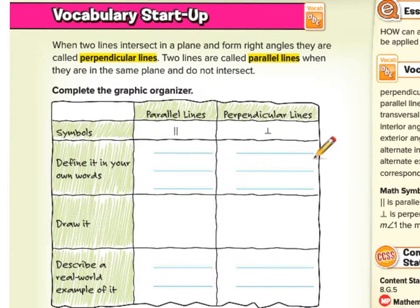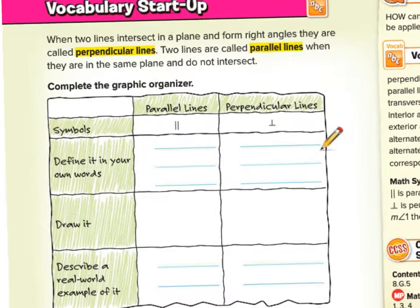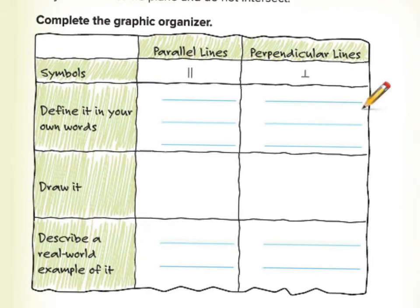Since we have so much vocabulary to look at, it only makes sense to start there. When two lines intersect in a plane and form right angles, they are called perpendicular lines. Two lines are called parallel lines when they are in the same plane and do not intersect. Let's make sense of this by filling out this table.